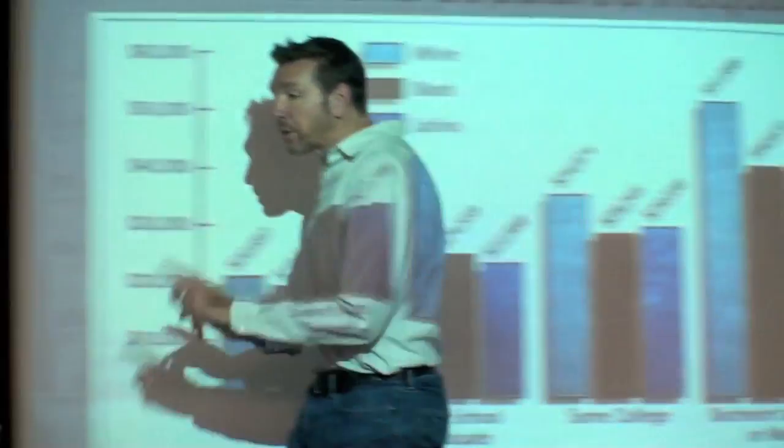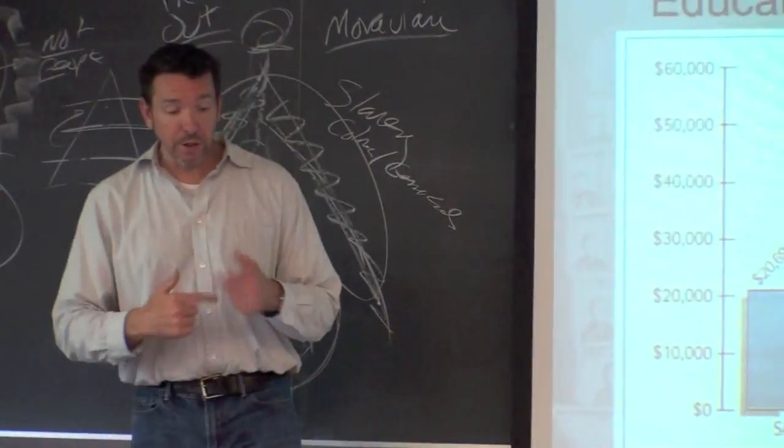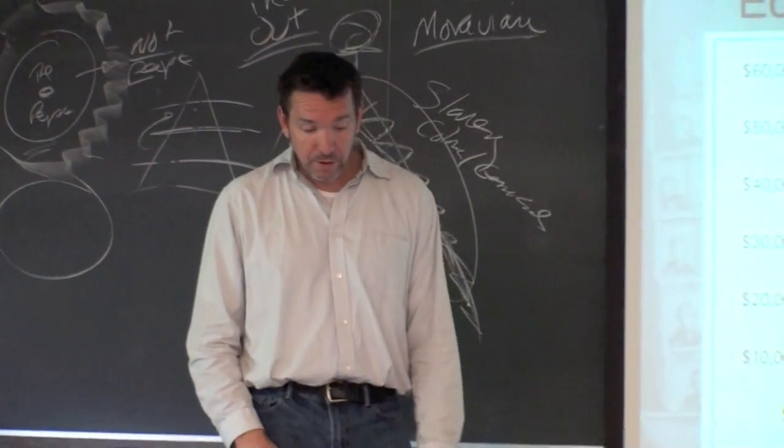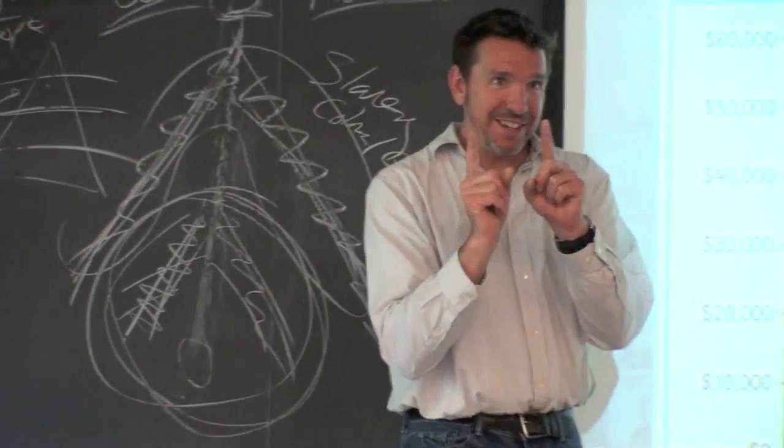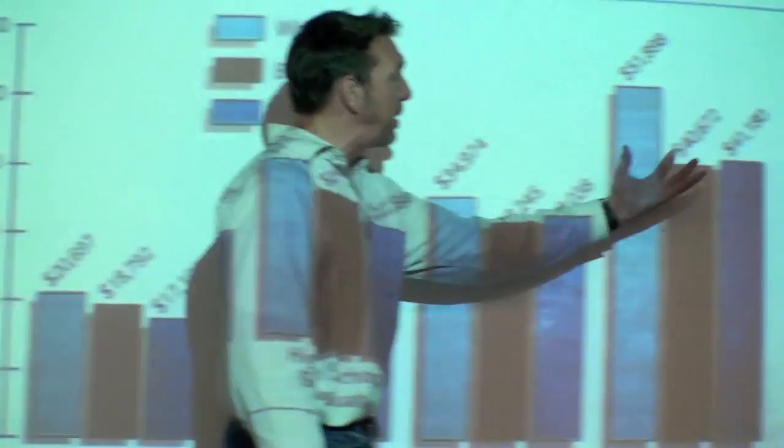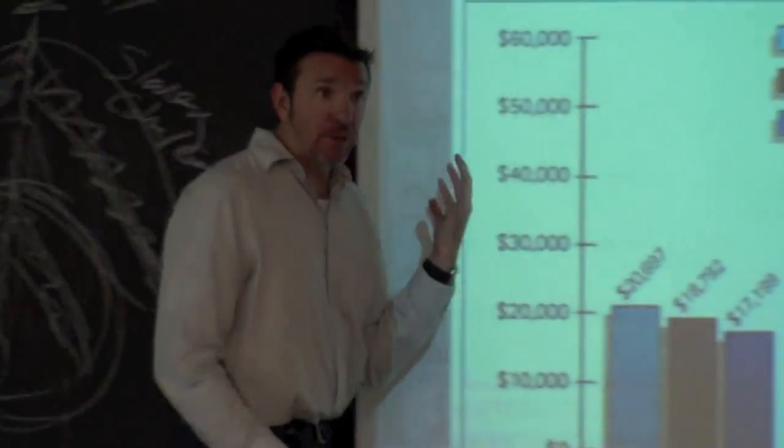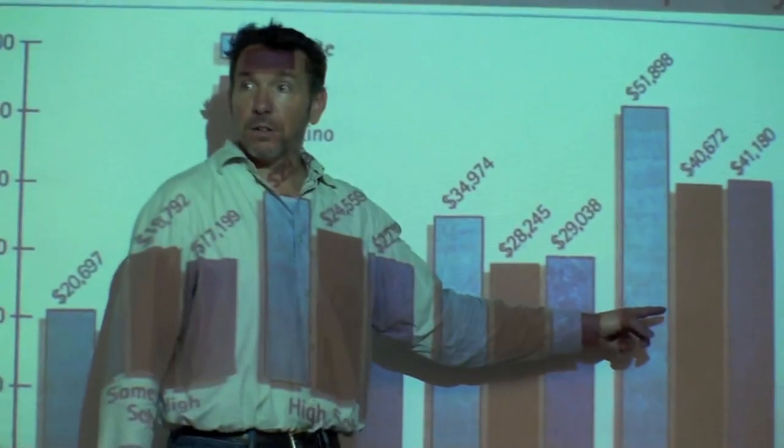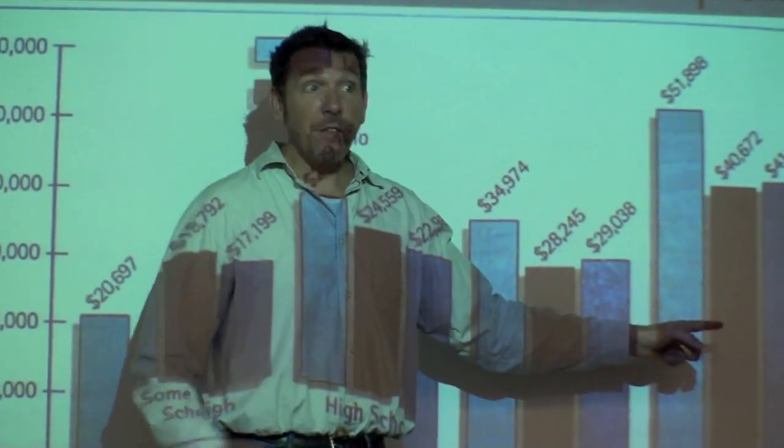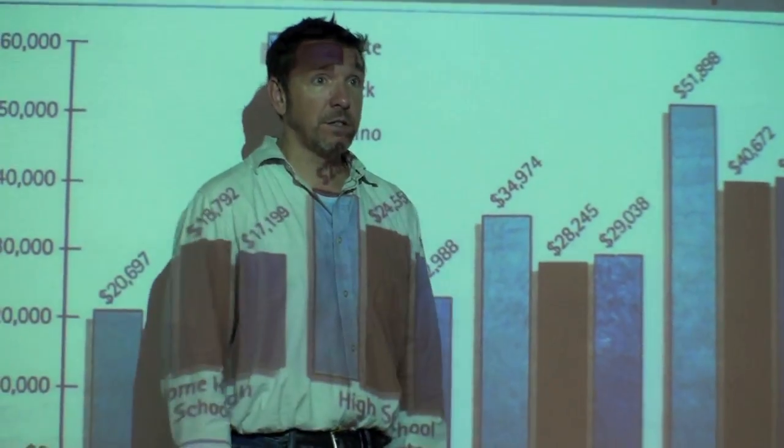There's this basic image about the relationship between structural inequality and the educational system. It's easy to see that educational attainment determines your income level. It's harder for you to see that your income level now determines your level of education. That's what I'm trying to get across to you right now.